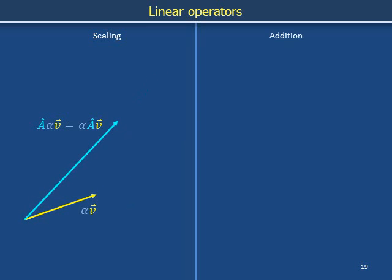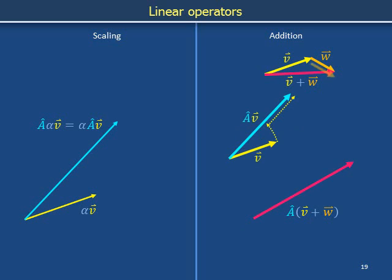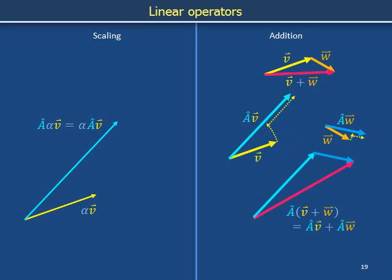A-hat also has a vector addition property. The resultant of adding vectors v and w, when passed through a-hat, gives the same result as applying a-hat to v and w individually and then vectorially adding the individual results. We can sketch a-hat applied to v alone and a-hat applied to w alone, and observe that vector addition can be performed either before or after application of operator a with the same result in both cases.